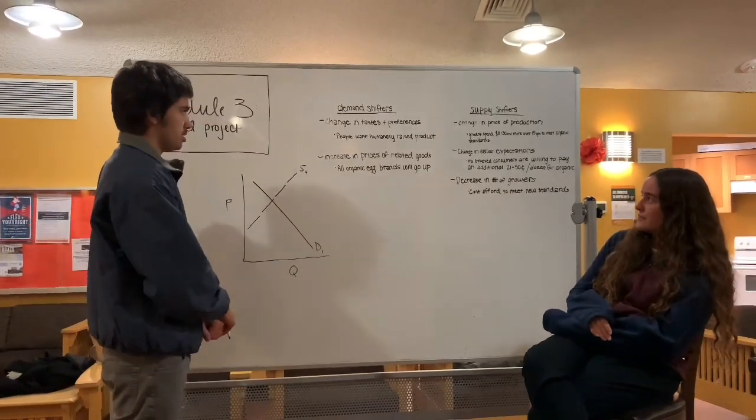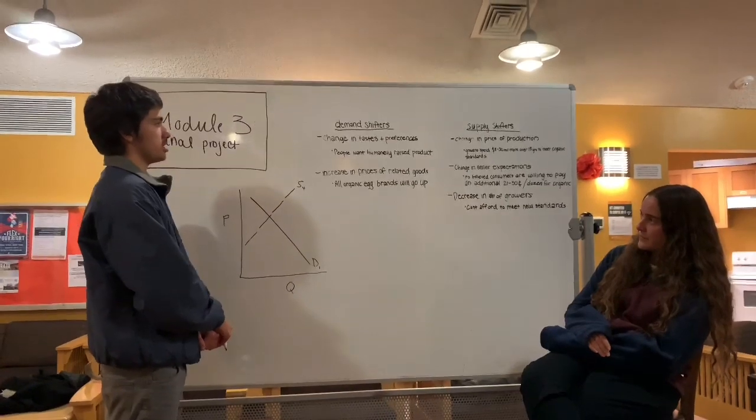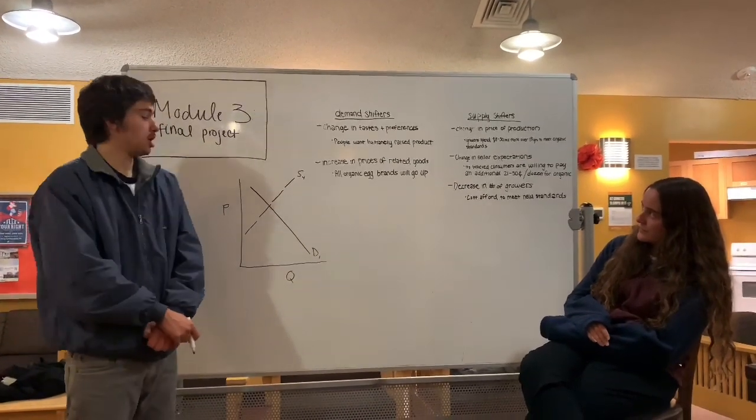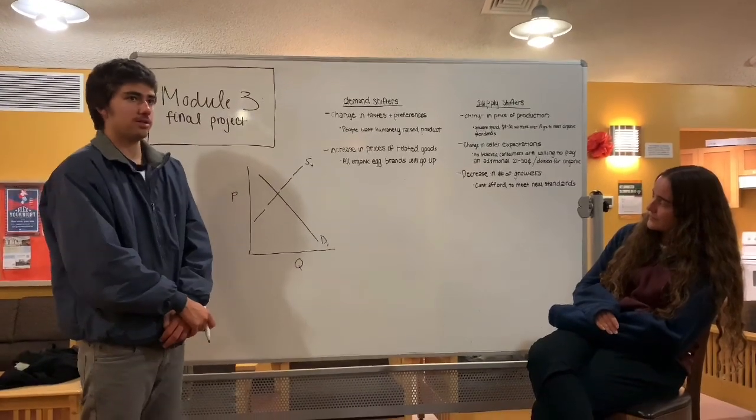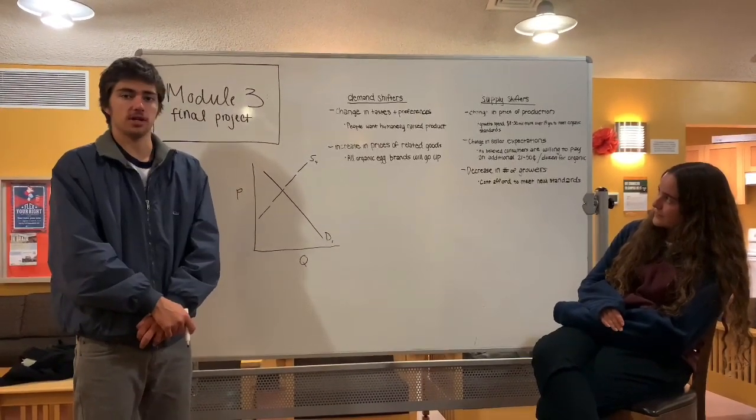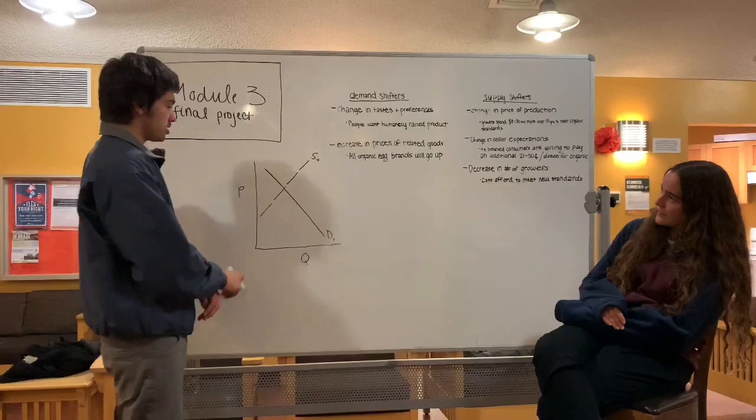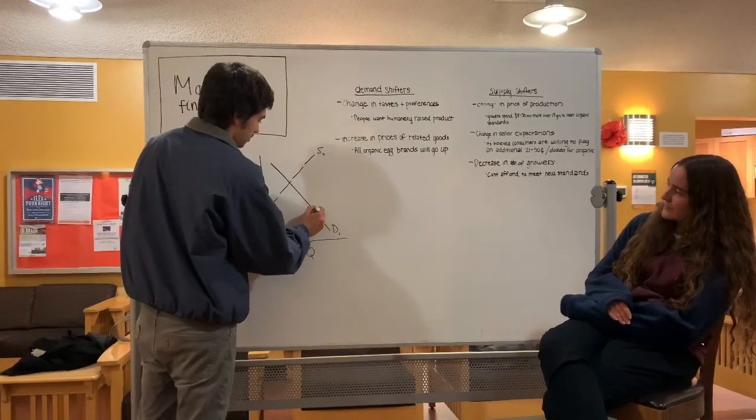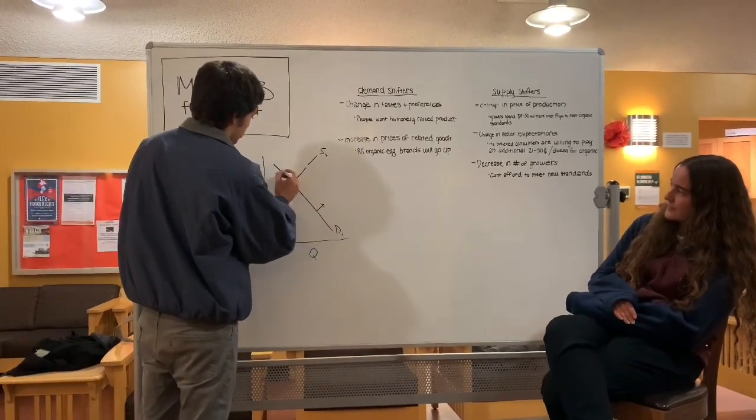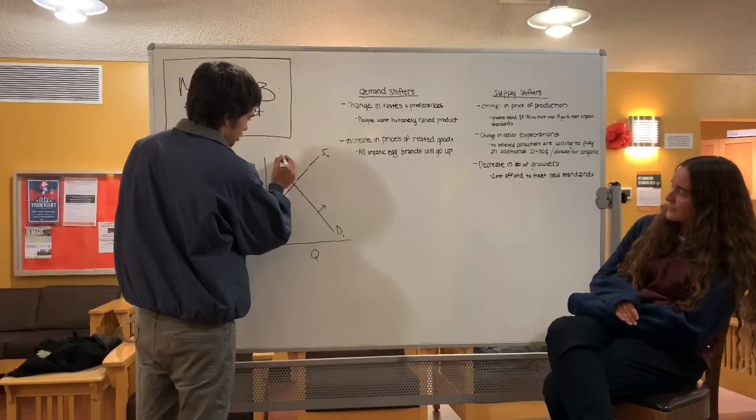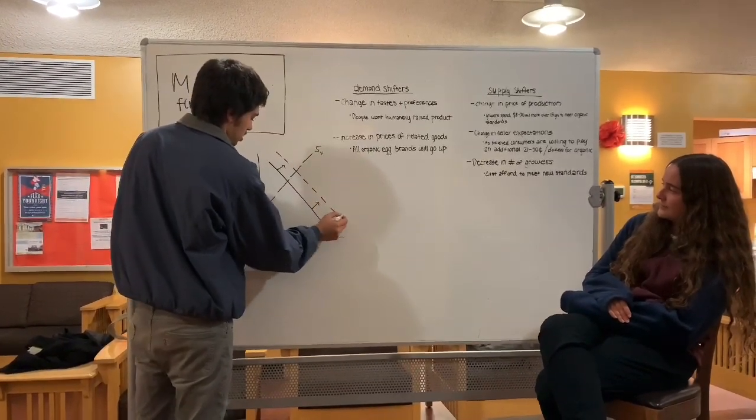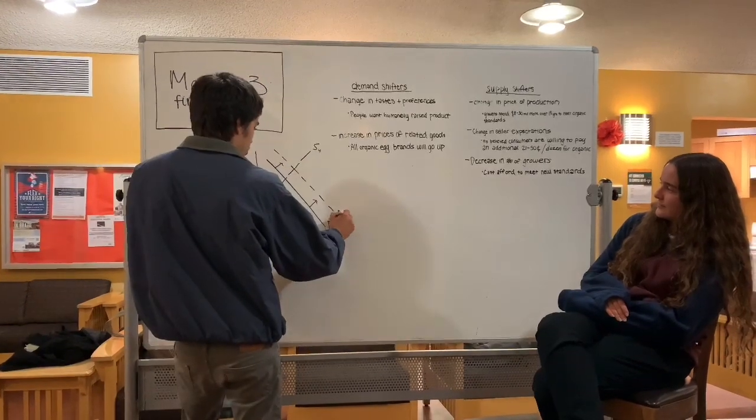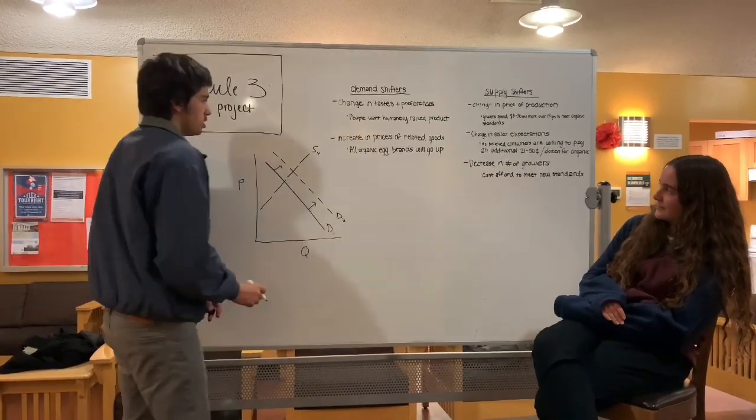So this is going to change up and to the right on the demand curve because people's preferences are changing towards them liking these organic eggs more than non-organic eggs. So this is going to shift our demand curve up and to the right. So we have our second demand, D2, right here.